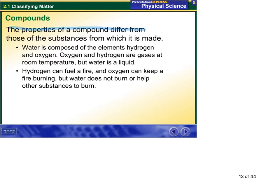Properties of a compound differ many times drastically from those of the elements it's made up of, such as water. Water is composed of elements hydrogen and oxygen. Hydrogen and oxygen are gases at room temperature. Water is a liquid.